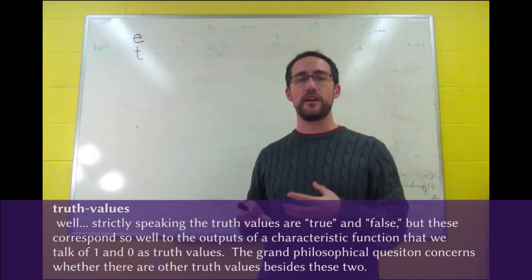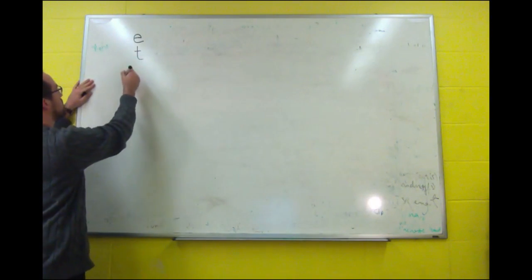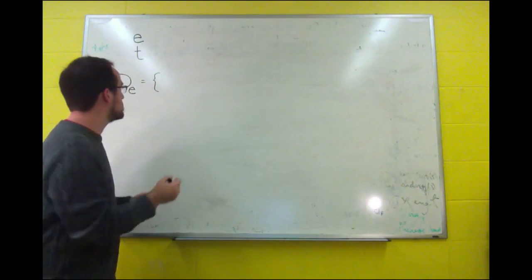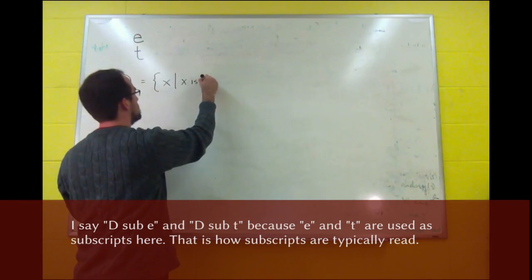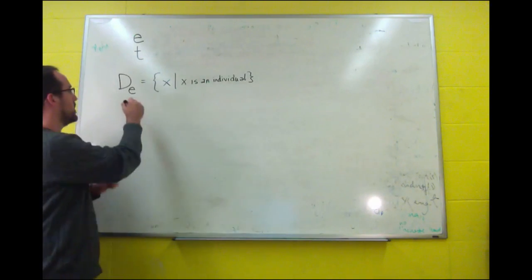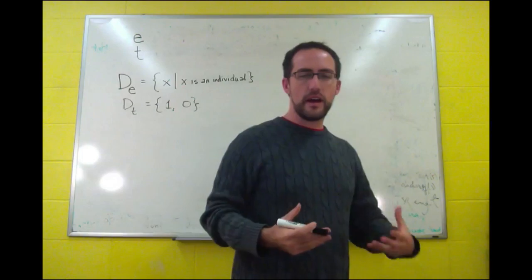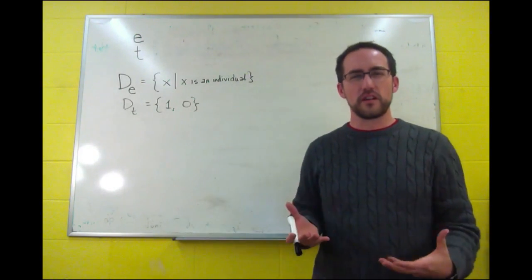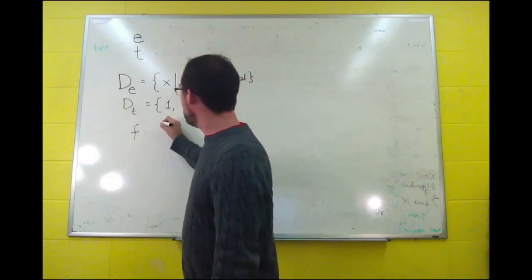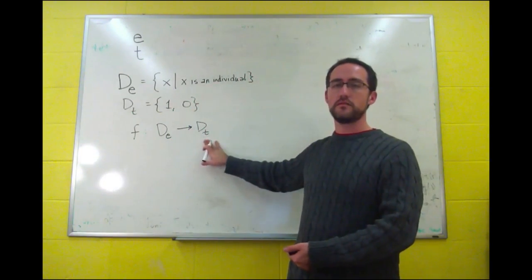For each type we can define a set of objects of that type using the domain function. So we say that D sub E is the set of all individuals, and D sub T is the set of all truth values, essentially 1 and 0. Now we can describe our functions in these terms. Earlier we had a function from a set of individuals to the set 1, 0. Now we can define it from the set of entities to the set of truth values, type E to type T.